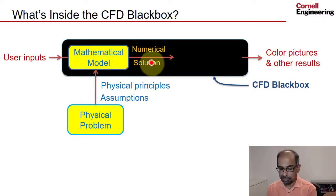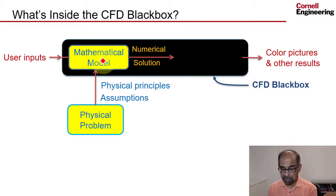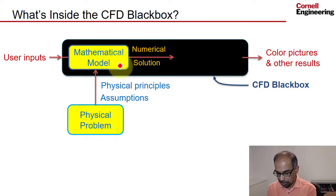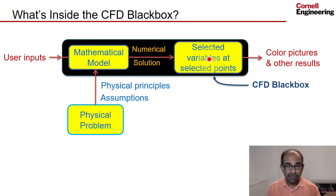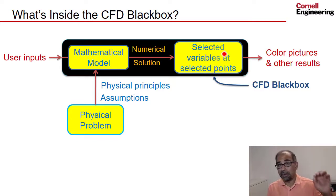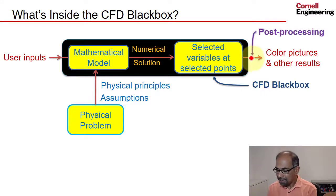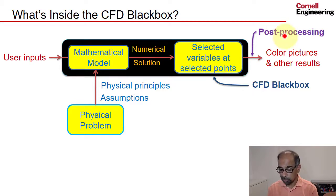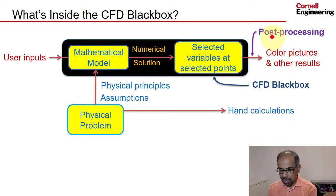Fluent, in our case, will do a numerical solution to that mathematical model by converting differential equations to algebraic equations. It will get selected variables at selected points — not all variables at all points — so we need to know what those selected variables are and what those selected points are, which are marked out through the mesh. Everything else is constructed from those selected variables at selected points through post-processing.